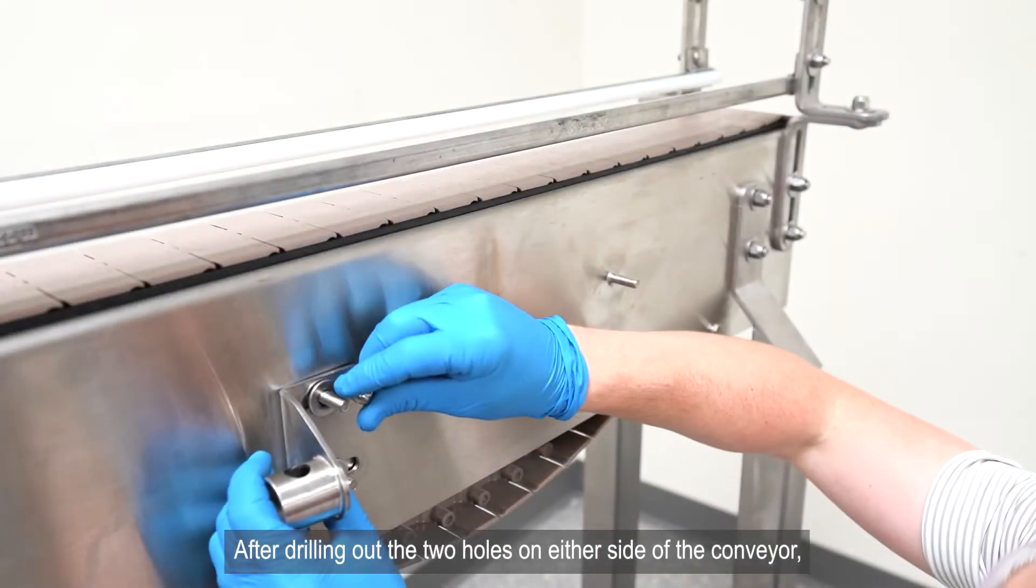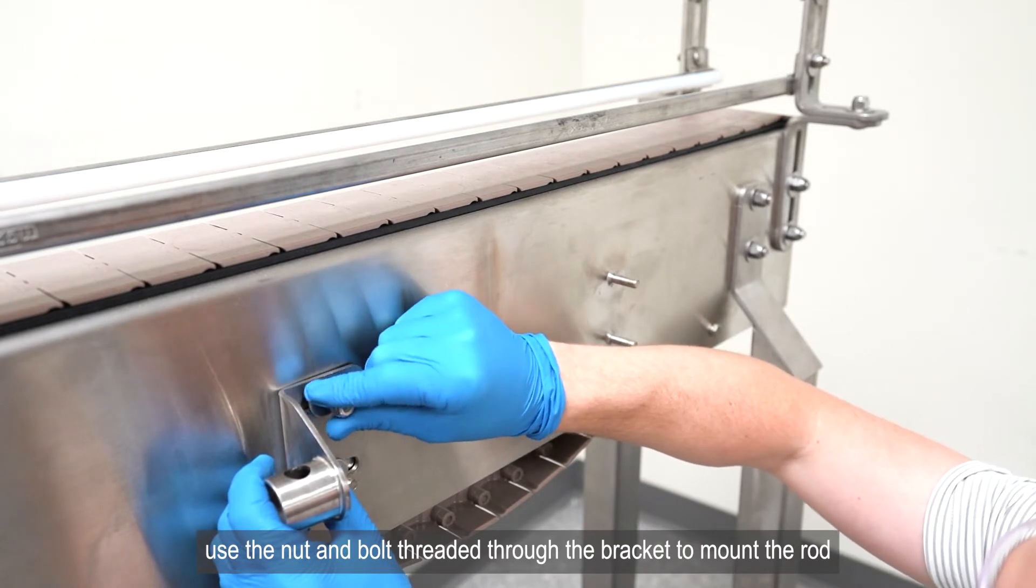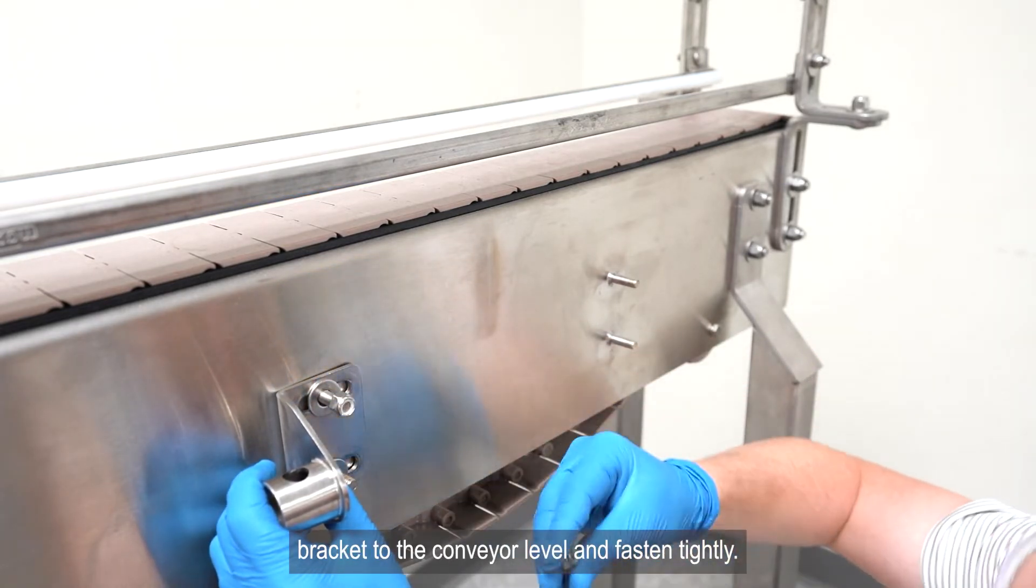After drilling out the two holes on either side of the conveyor, use the nut and bolt threaded through the bracket to mount the rod bracket to the conveyor. Level and fasten tightly.